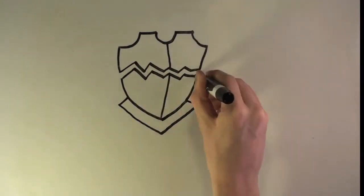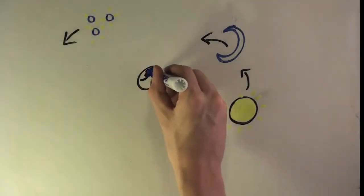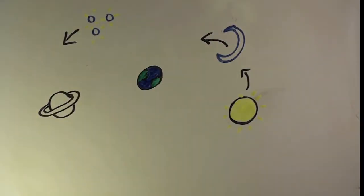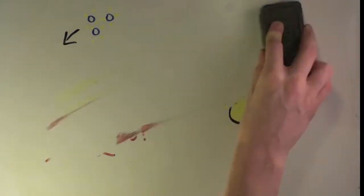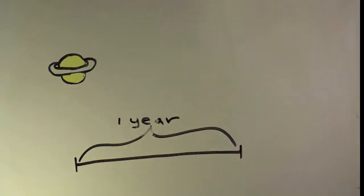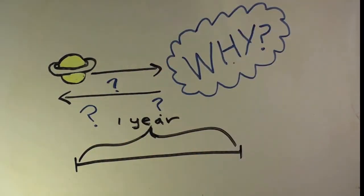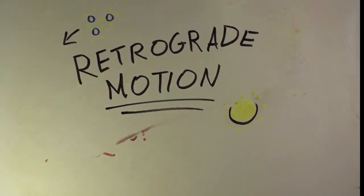There was one chink, however, in the geocentrist's armor. The sun, the moon, and the stars all appear to move around the Earth, but the planets do not. At different points during the year, planets seemed to turn around and move backwards in the sky, and at the time, nobody knew why. This phenomenon is called retrograde motion.